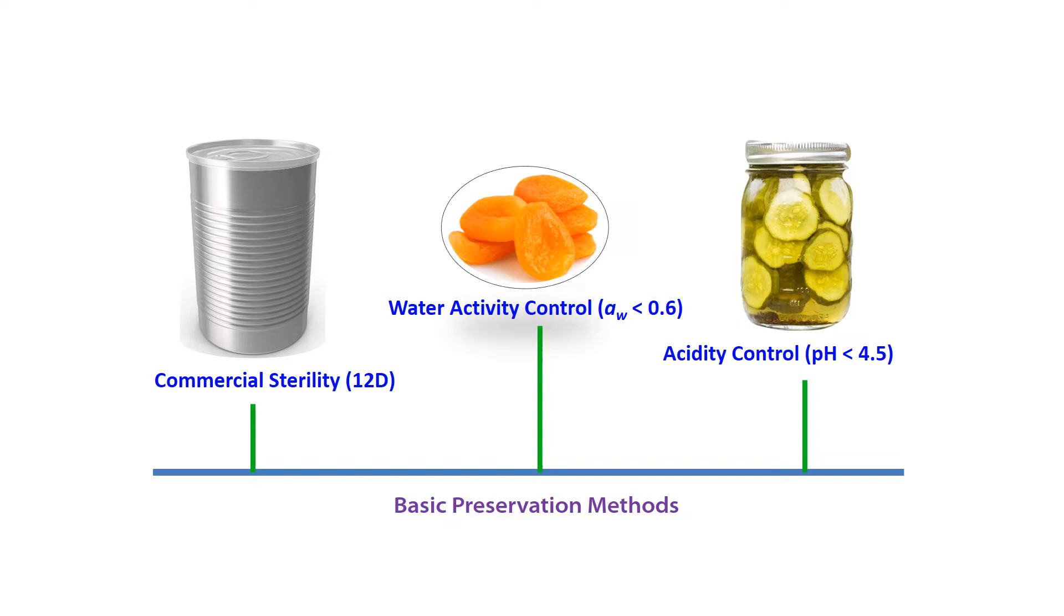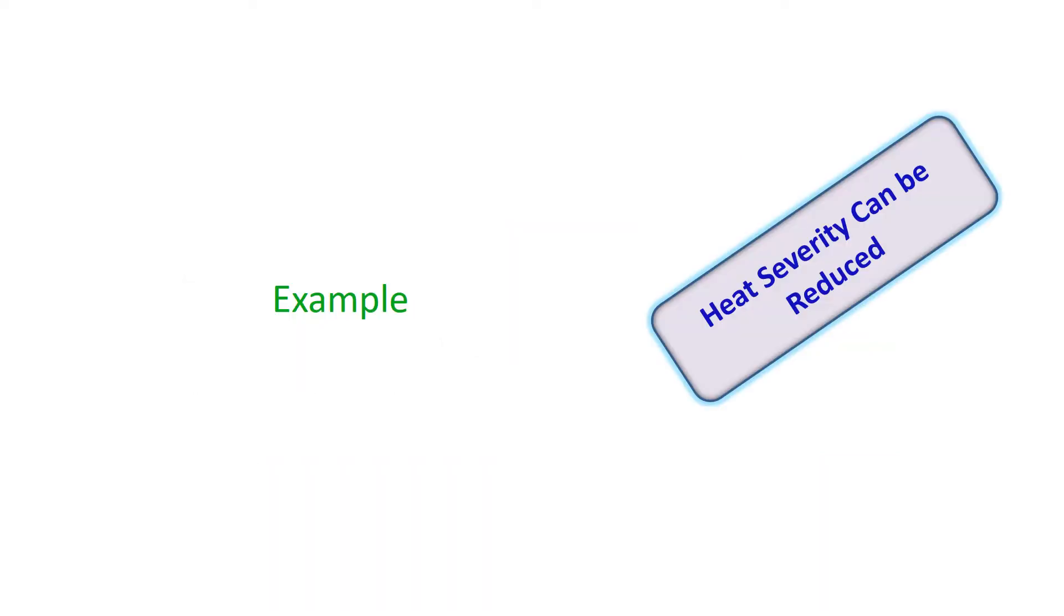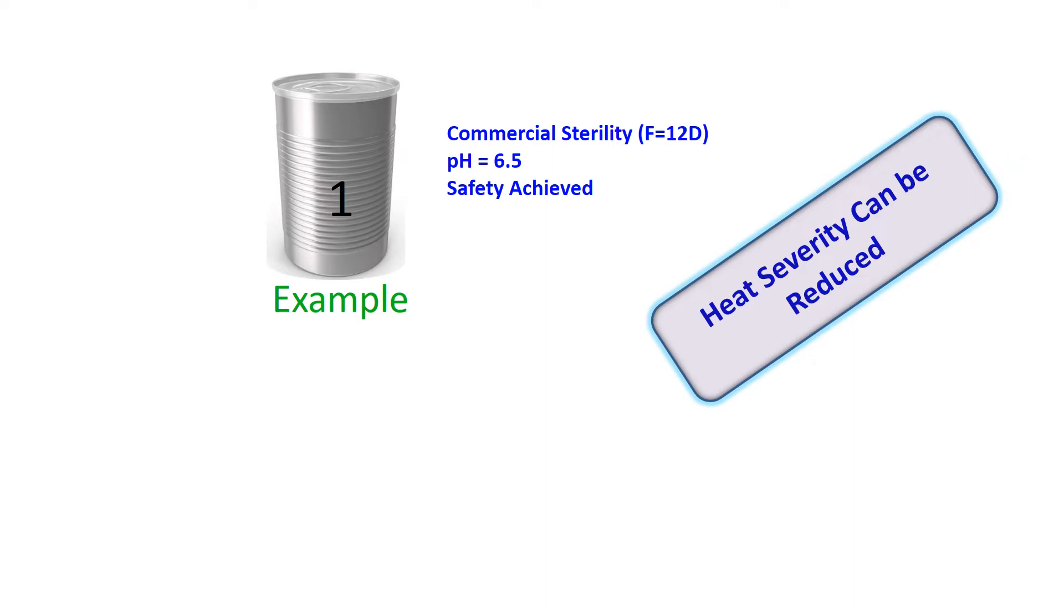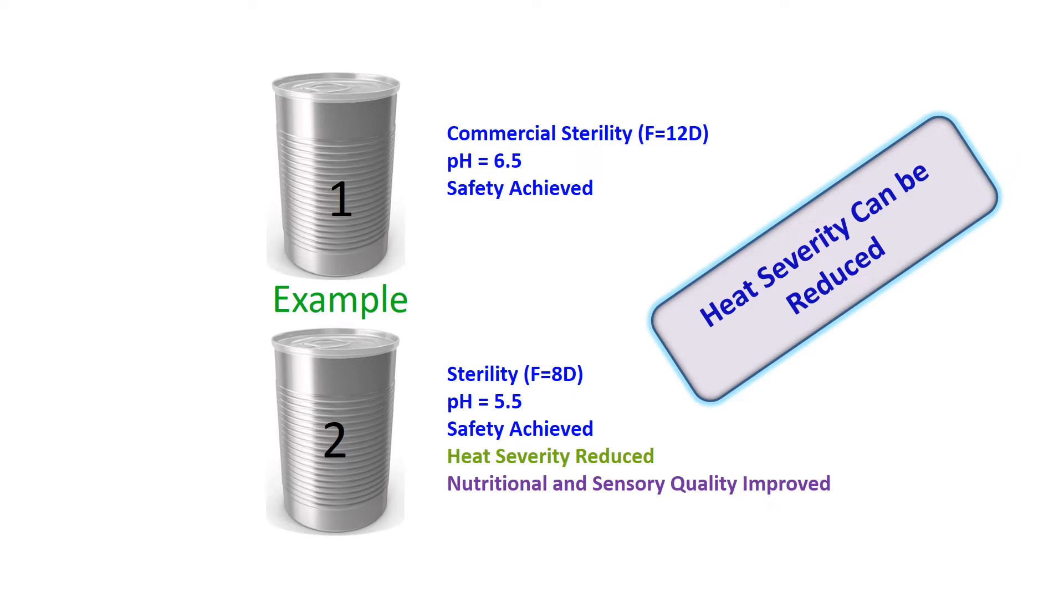I could apply these three hurdles in combination at lower levels of intensity. For example, we have achieved safety of a canned food with 12D at pH 6.5. I could apply pH 5.5 with an 8D heating process having similar safety. This is called hurdle technology.